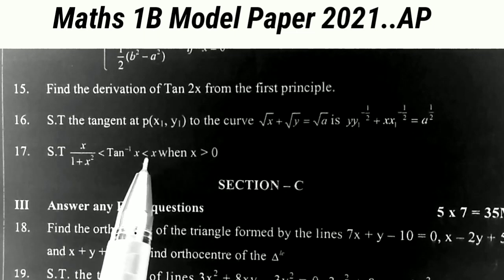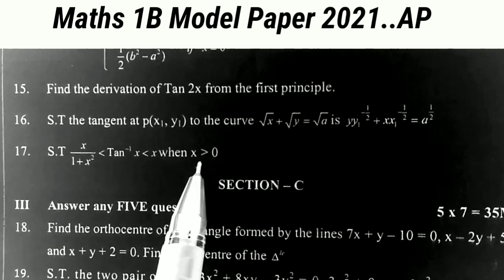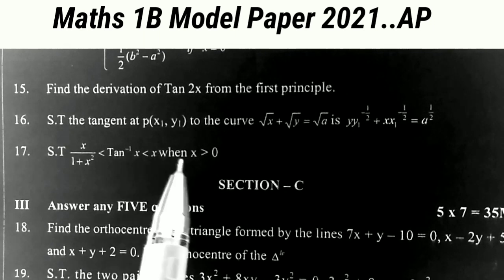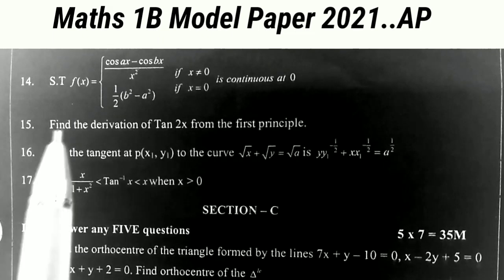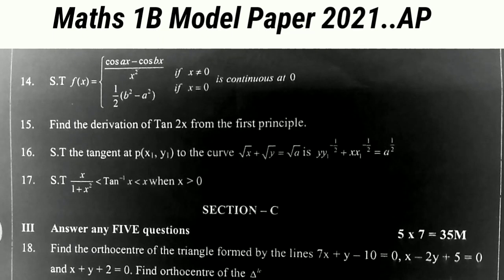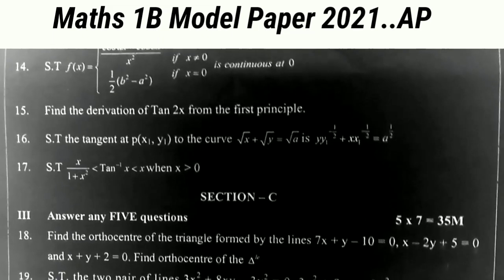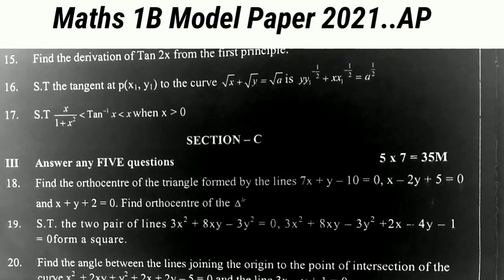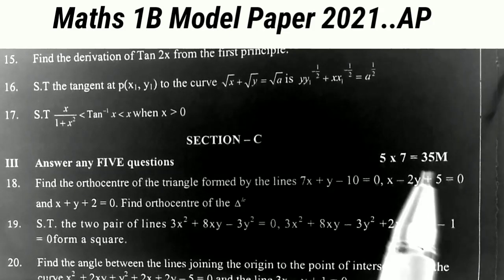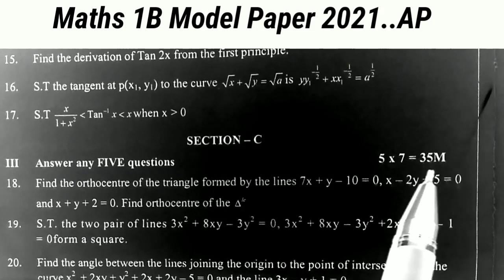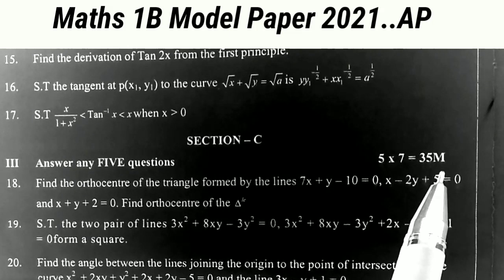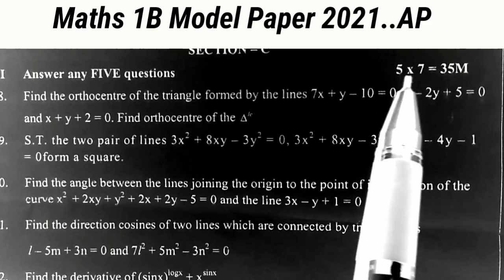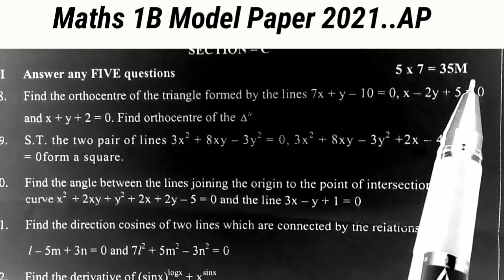The last Section B question: show that x / (1 + x²) < tan⁻¹(x) < x for x > 0. This is the question from increasing and decreasing. Those are all the four-mark problems. Now coming to Section C. In Section C we have seven questions; we have to attempt only five problems, and each one carries seven marks — that is 5 × 7 = 35 marks.